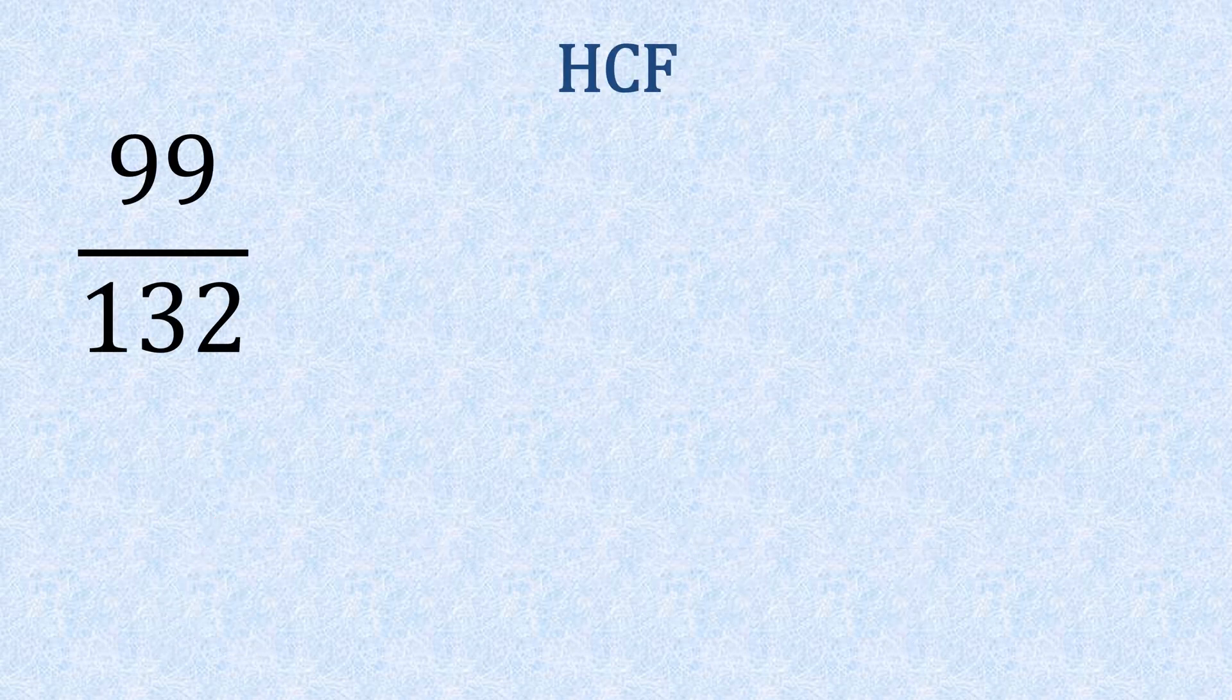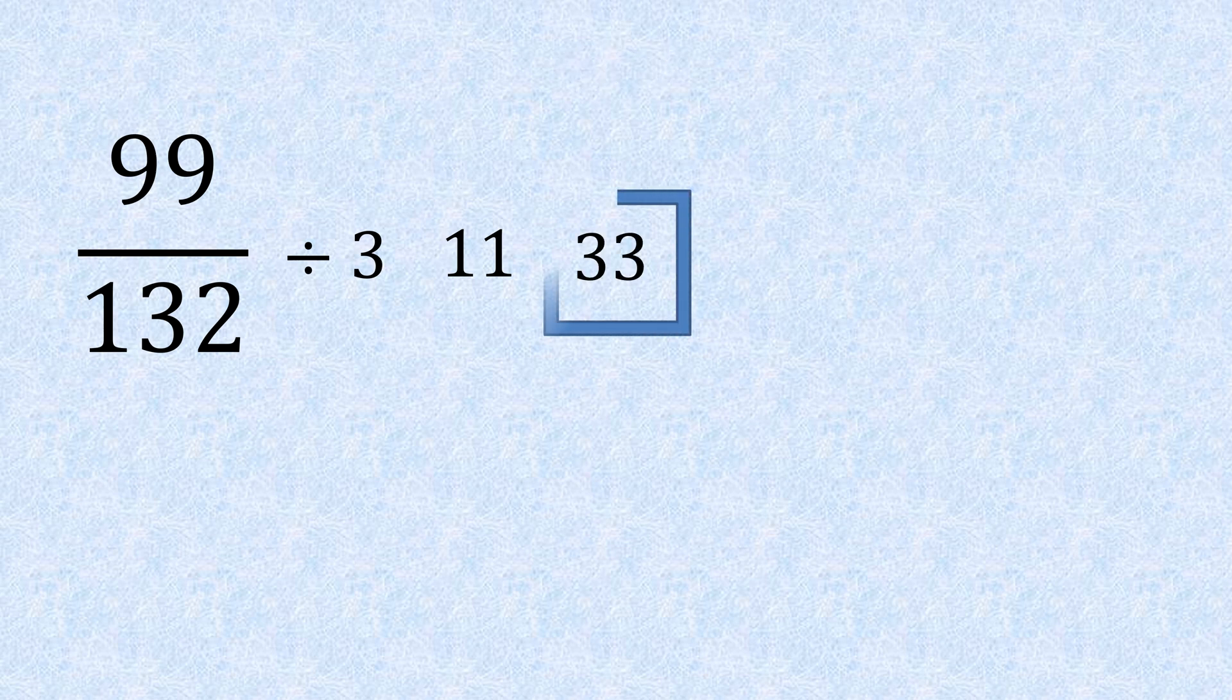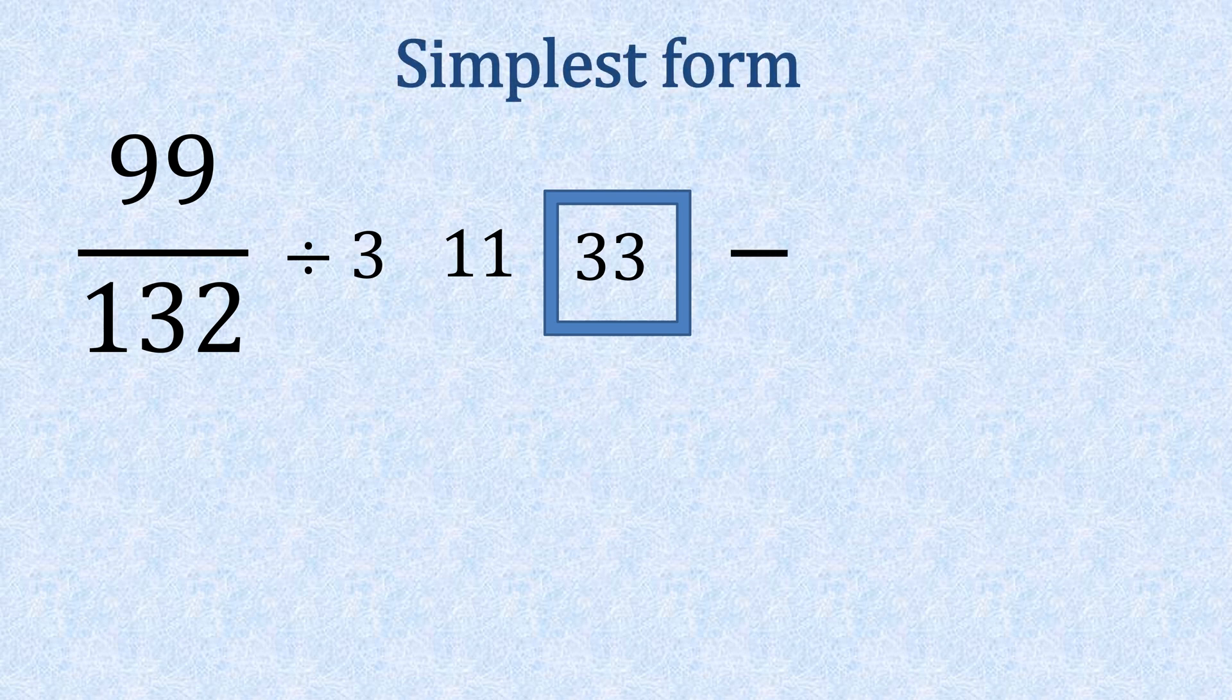Ninety-nine over one hundred and thirty-two. If we look, we can see it's divisible by three, eleven, and if we look closely, thirty-three. So when we use thirty-three, we should be able to reduce it straight away if it's the highest common factor with one step. So ninety-nine divided by thirty-three is three, and one hundred and thirty-two divided by thirty-three is four, taking us to three quarters and we can't simplify that anymore.